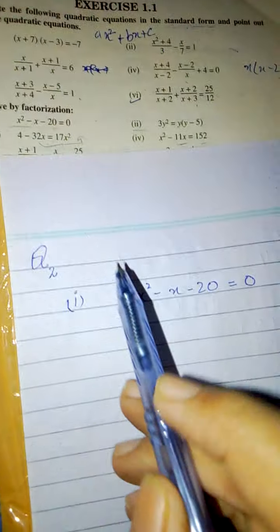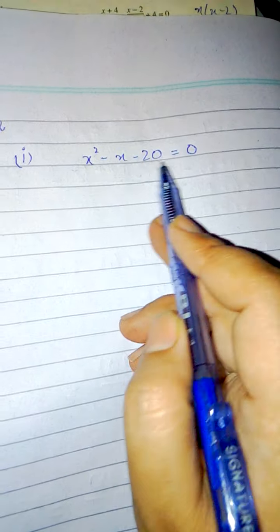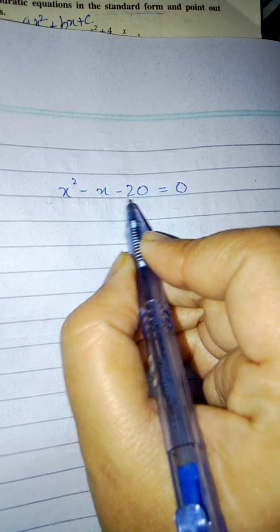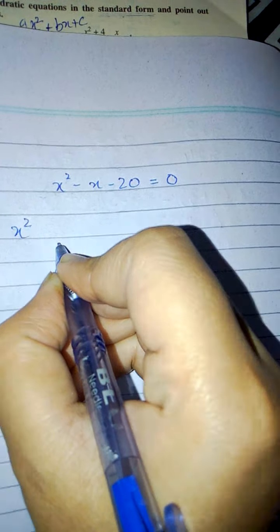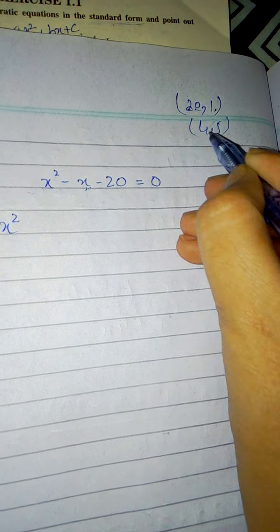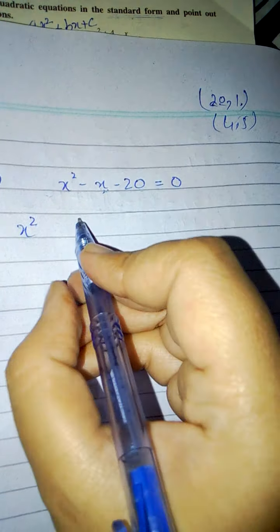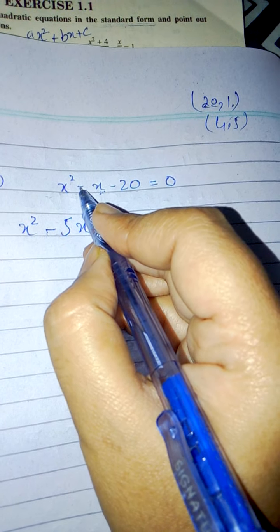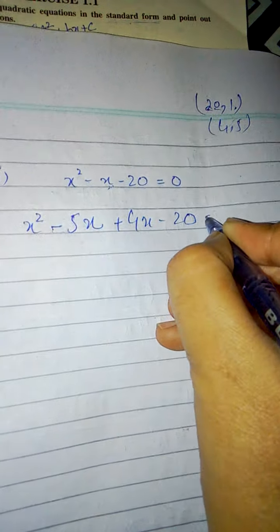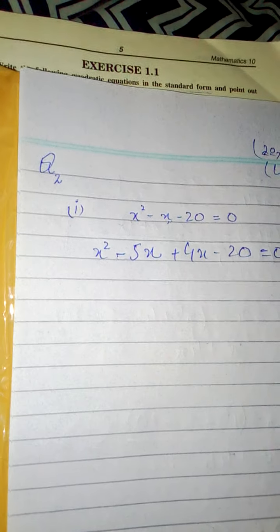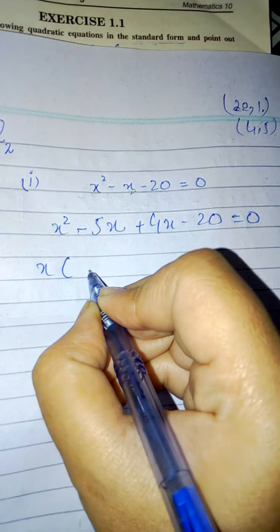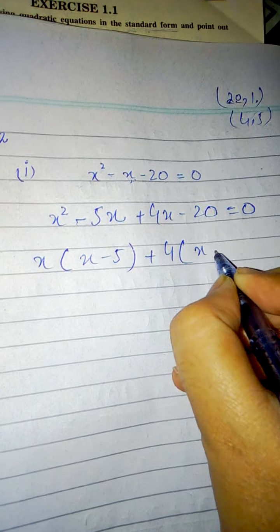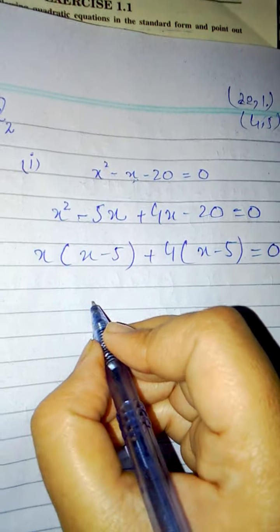Question number two requires factorization. Looking at the factors, we need to check which factors can give us minus 20. The required factors with minus sign give us minus 20. Now pair them up: x minus 5 and this will result in 4x minus 5. This will give us x minus 5 times x plus 4 equals zero.